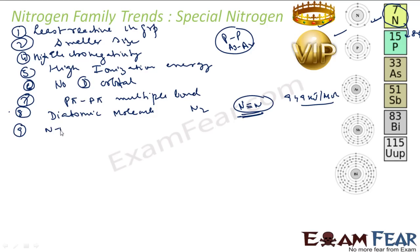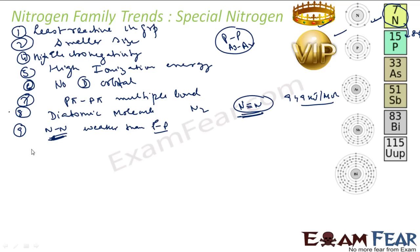But if you talk about the Nitrogen single bond, this bond is weaker — it is weaker than the Phosphorus-Phosphorus bond. The reason why Nitrogen doesn't form big catenation and doesn't show the catenation property that much is because the Nitrogen-Nitrogen single bond is weaker than the Phosphorus-Phosphorus single bond. Why? Because of the high inter-electronic repulsion — there is a huge repulsion between these electrons.